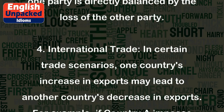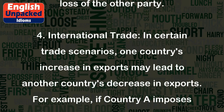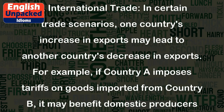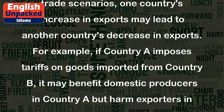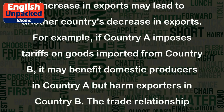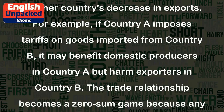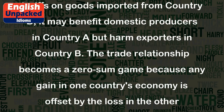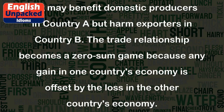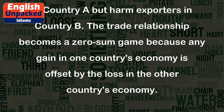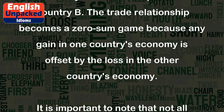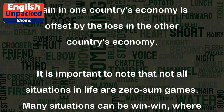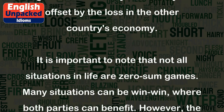4. International Trade: In certain trade scenarios, one country's increase in exports may lead to another country's decrease in exports. For example, if country A imposes tariffs on goods imported from country B, it may benefit domestic producers in country A but harm exporters in country B. The trade relationship becomes a zero-sum game because any gain in one country's economy is offset by the loss in the other country's economy.